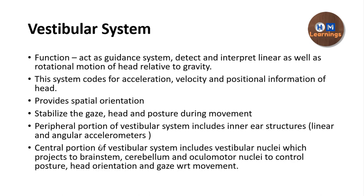The peripheral portion includes the inner ear structures, which act as inputs. They are going to sense the head movement with respect to gravity and then code the information in the form of action potentials, which travel via the vestibular nerve — a division of the vestibulocochlear nerve — and go to the brainstem.